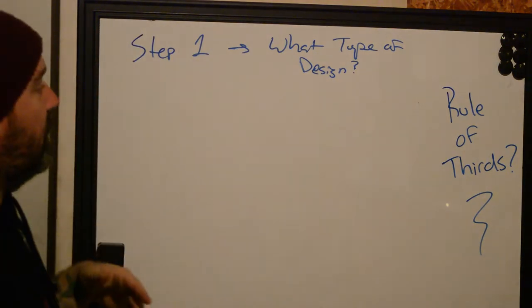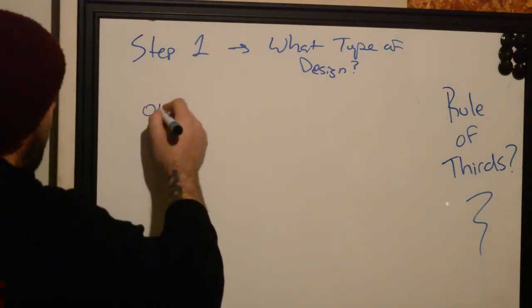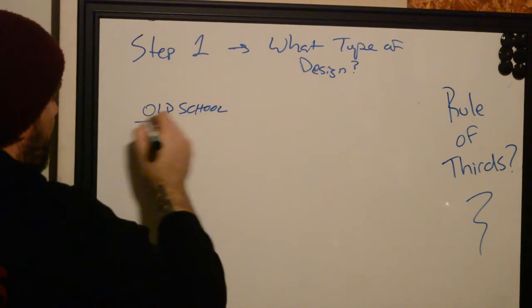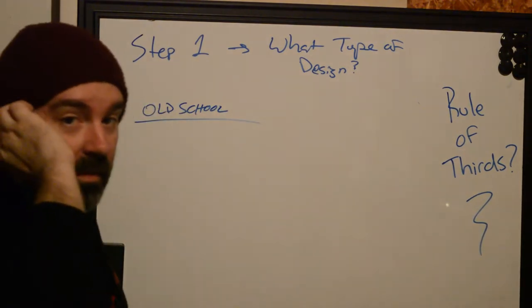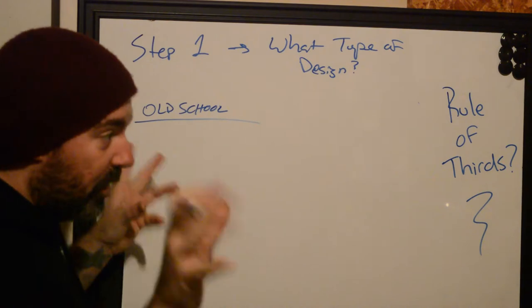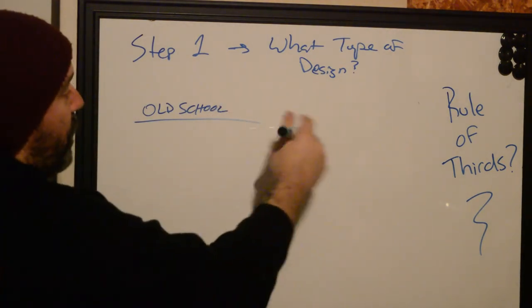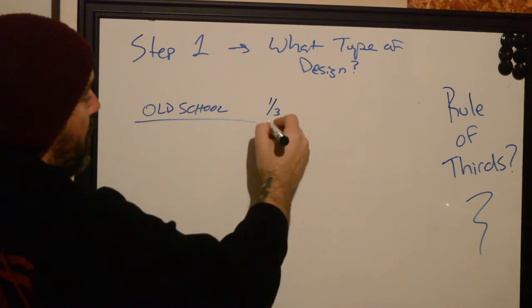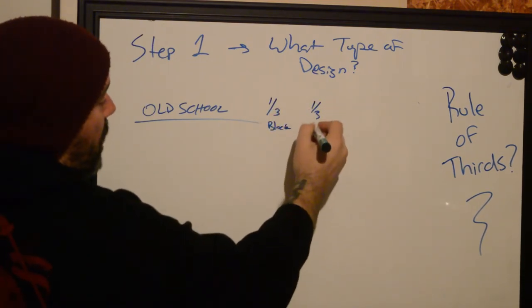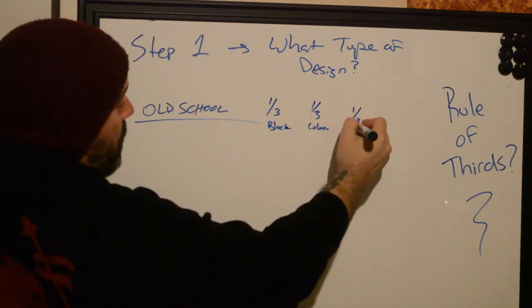If we just start with the easiest one on average — if we're going to do like old school, traditional designs, whatever you want to call it — usually we're going to have the rule of thirds, which is going to be one third black, one third color, and one third skin.